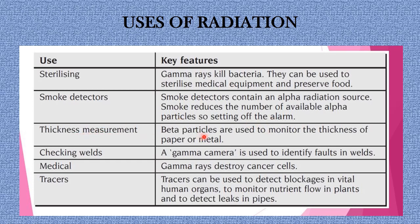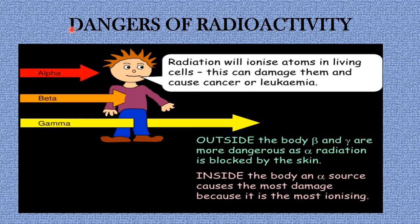Another use of radiation is thickness measurement — beta particles are used to monitor the thickness of paper or metal during manufacturing. A gamma camera is used to identify faults in wells. In medicine, gamma rays can be used to destroy cancerous cells, targeting and killing cancer cells. Radiation is also used as tracers to detect blockages in vital human organs, monitor nutrient flow in plants, and detect leaks in pipes.